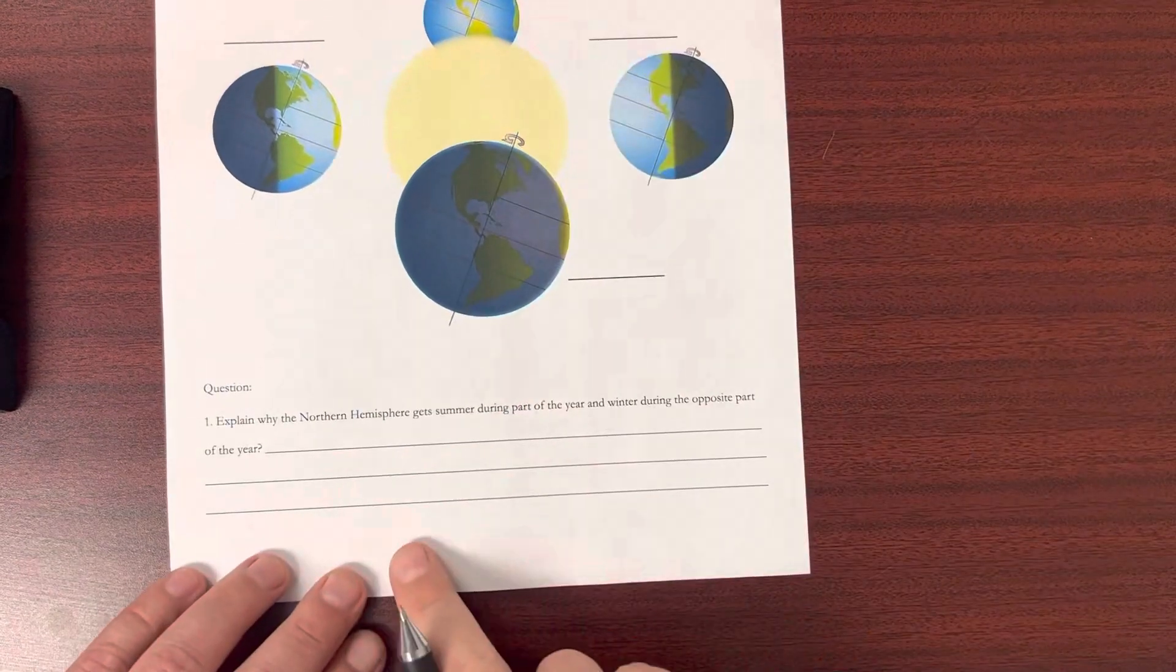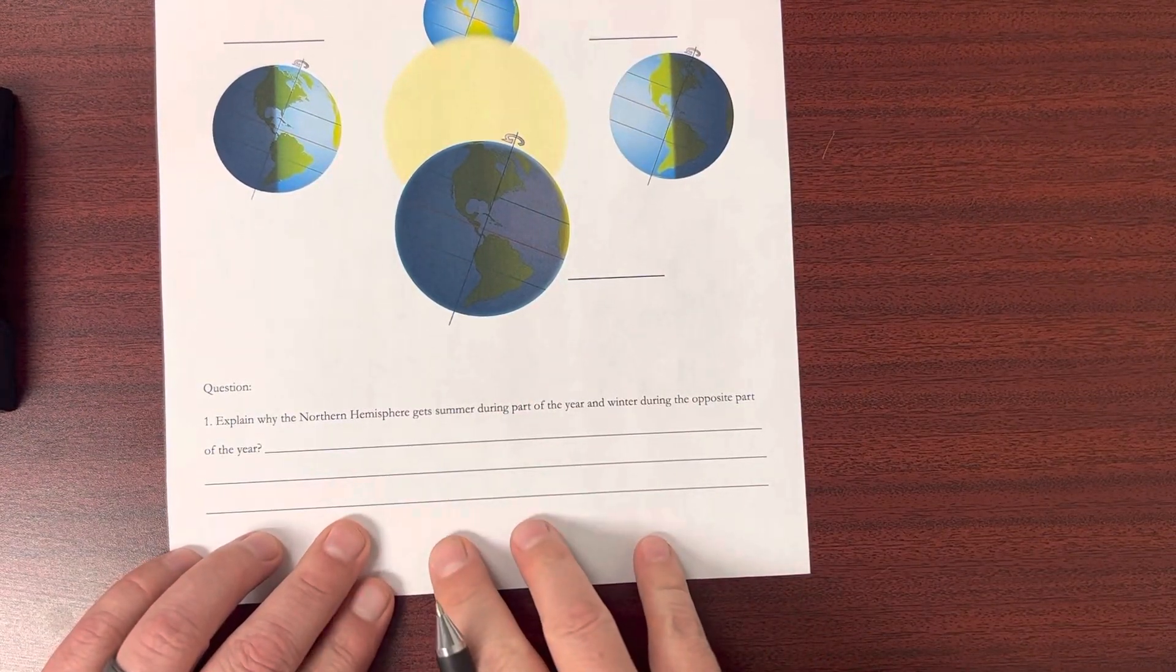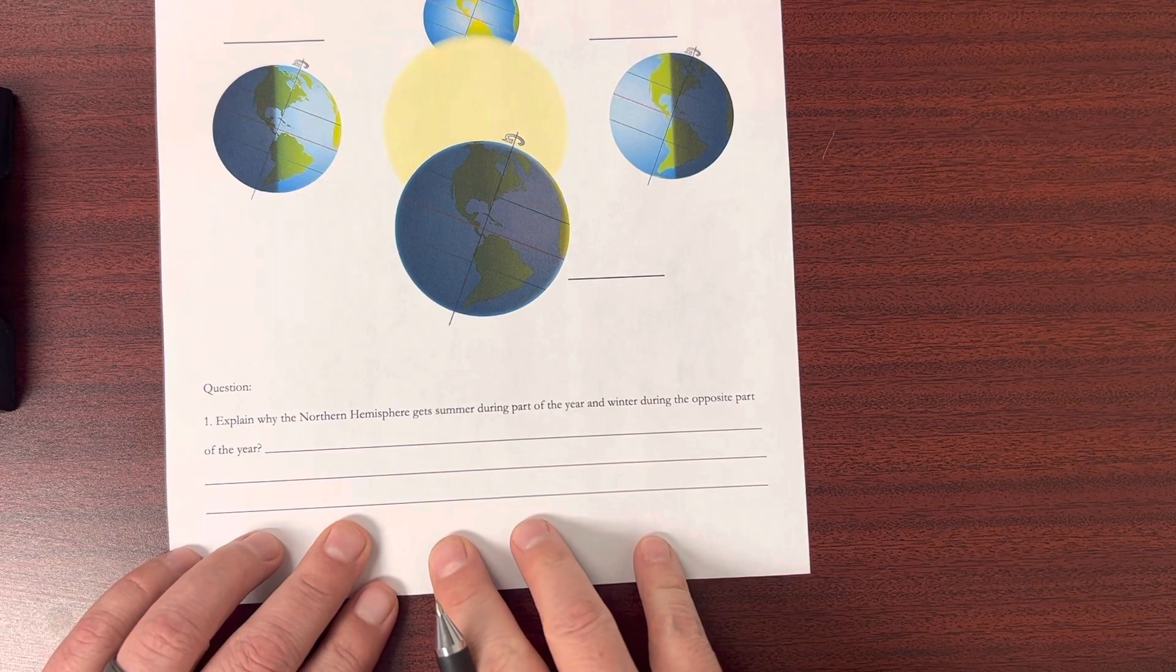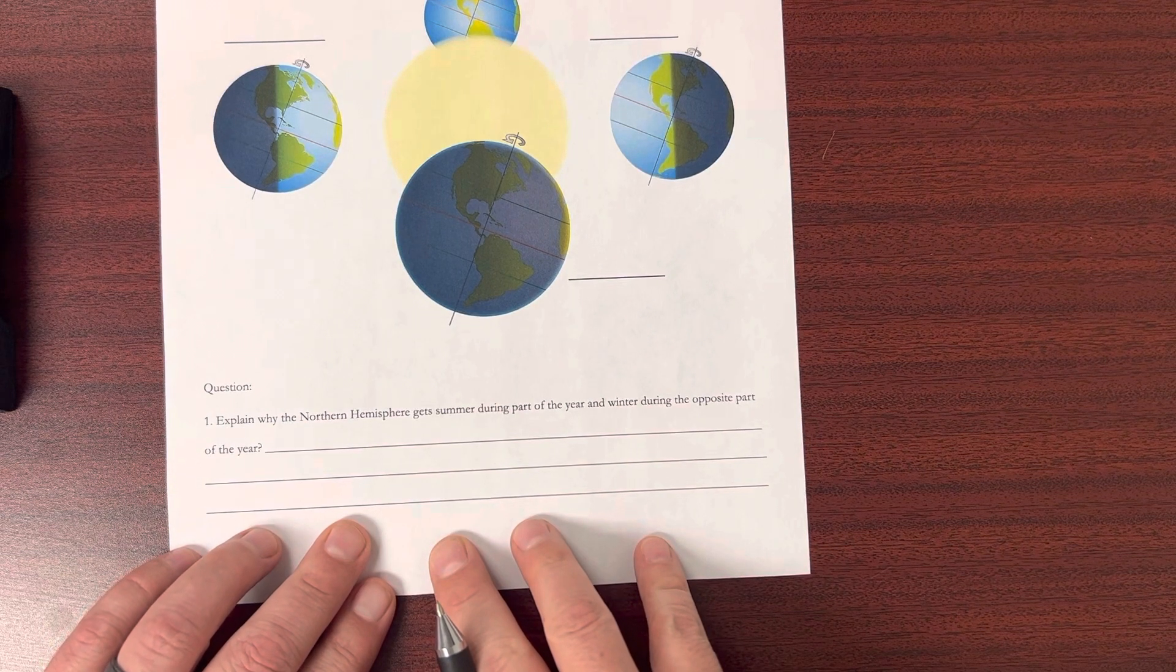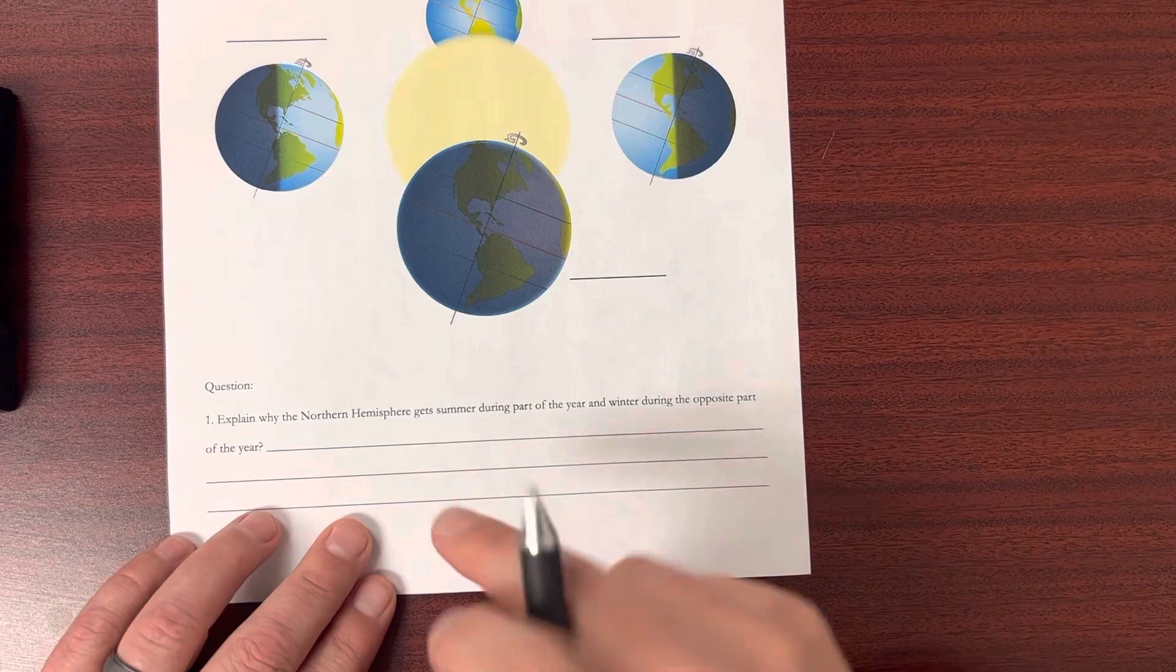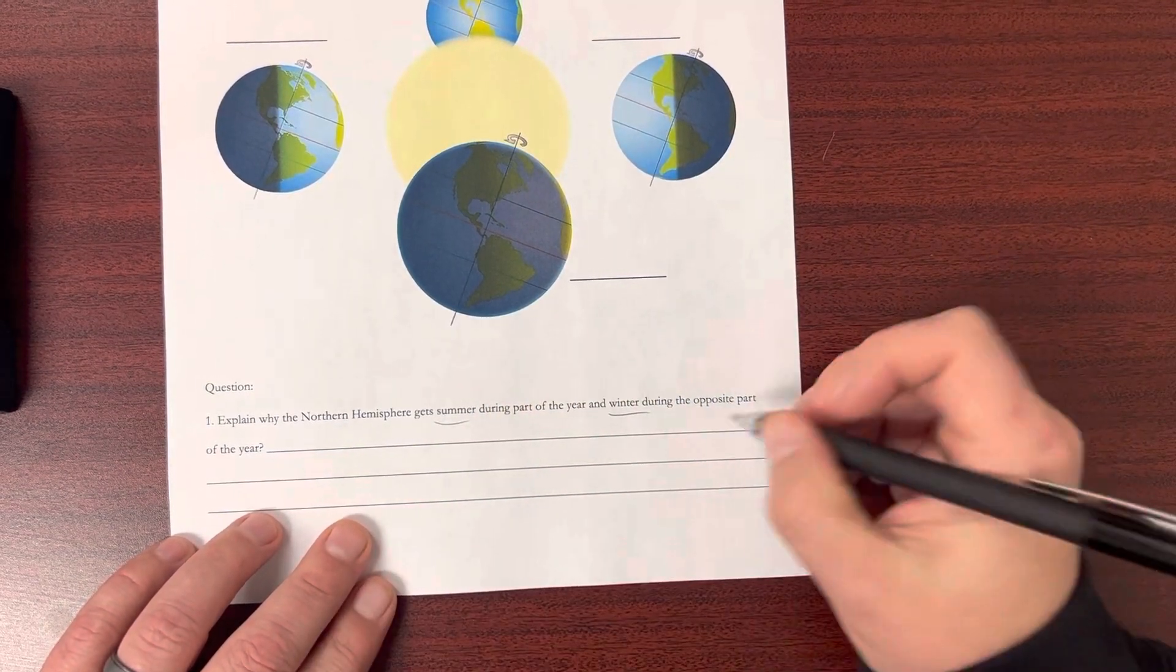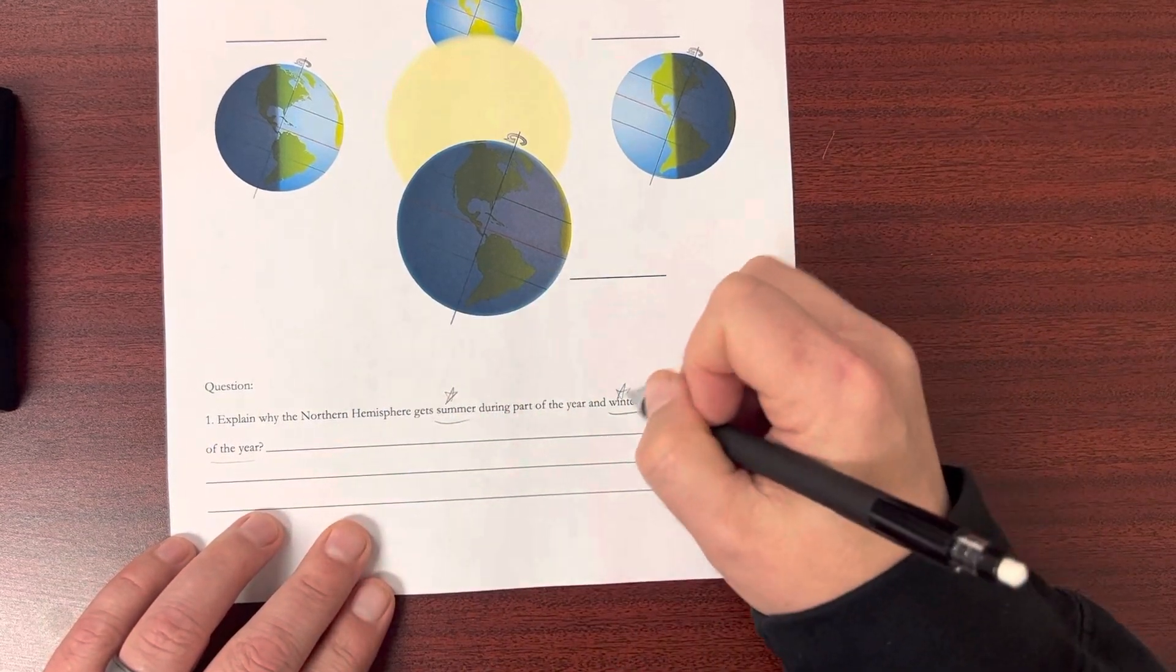And then you just have a quick little question to answer down at the bottom to explain why the northern hemisphere gets summer during parts of the year and winter during the opposite times of the year. So why do these things happen at opposite times of the year? What is it that's causing summer and winter?